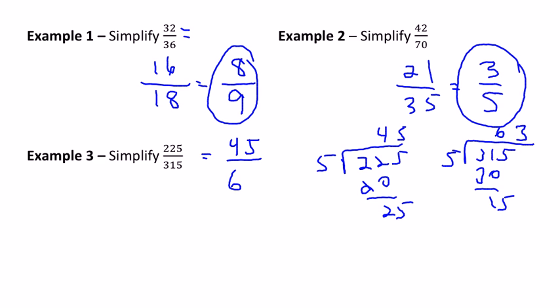So now we've changed 225 over 315 to 45 over 63. But we don't want to stop until we're sure there's nothing else that goes into those. Well, 5 doesn't go into 63, so we can't do another 5.